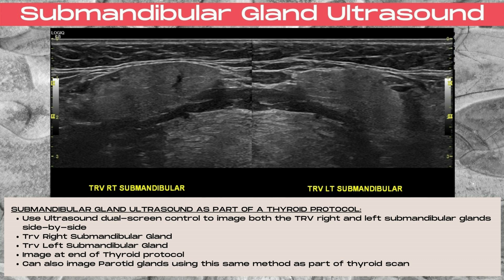To document the submandibular glands as part of a thyroid ultrasound protocol, you want to use the dual screen ultrasound control so that both the right and the left submandibular glands can be imaged within the same image. In the right dual screen image, you want to image the transverse right submandibular gland, and in the left dual screen image, you want to image the transverse left submandibular gland. You can place these images at the end of the thyroid protocol, and typically the parotid gland is also imaged using dual screen. Note that this represents the right and the left side of the patient's body, rather than the right and left sides of the ultrasound monitor.